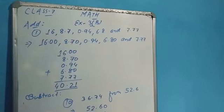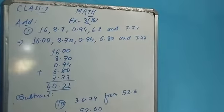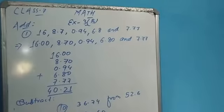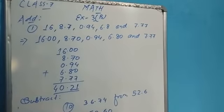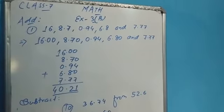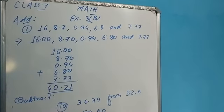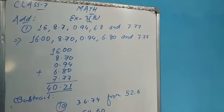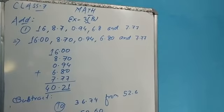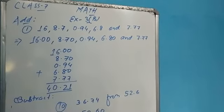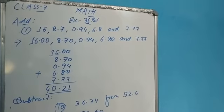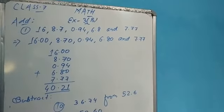Students, in exercise 3B it is basically addition of decimals. The first problem has numbers 16, 8.7, 0.94, 6.8, and 7.77. I told you in the previous class that to add decimals, we convert to like decimals. We make the decimal places equal. We have maximum 2 decimal places, so we have to write all the numbers with 2 decimal places.